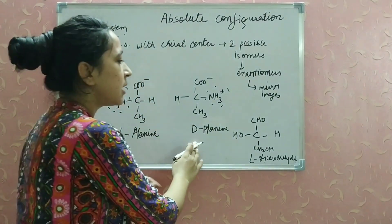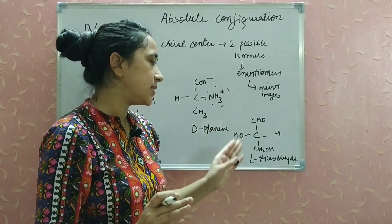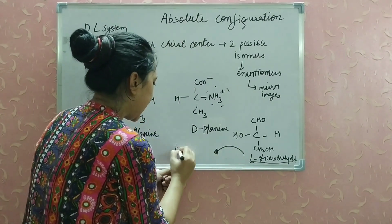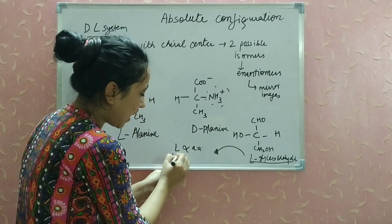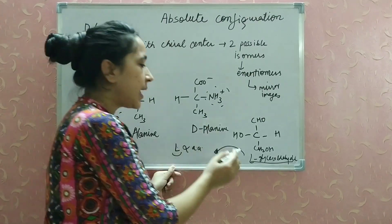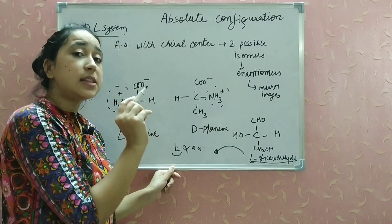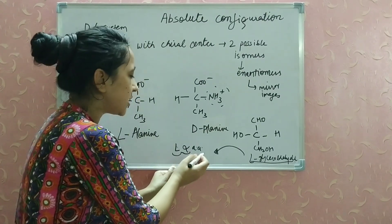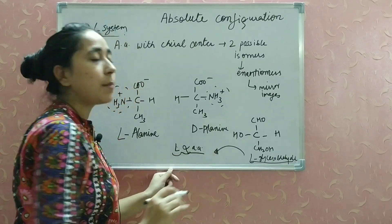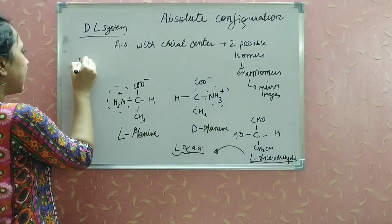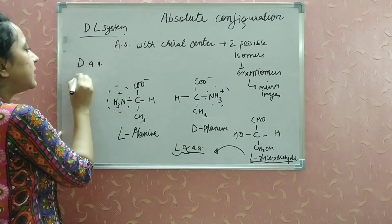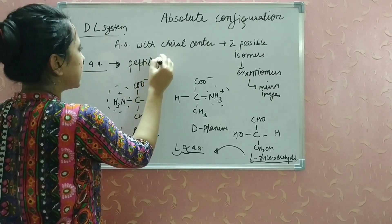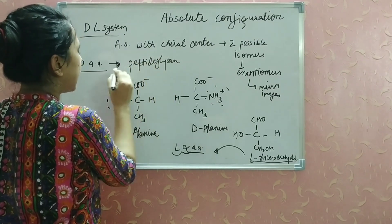Generally all amino acids are derived from L-glyceraldehyde, so all amino acids are L-alpha amino acids. They are L because they are derived from L-glyceraldehyde, and alpha because the NH3 plus group and COO negative group are present on the alpha carbon. D amino acids are present in the peptidoglycan, which is the cell wall of bacteria, and in some antibiotics.